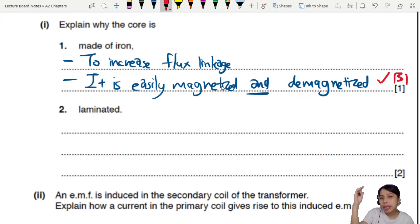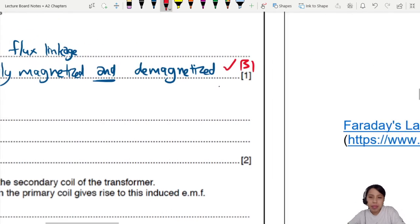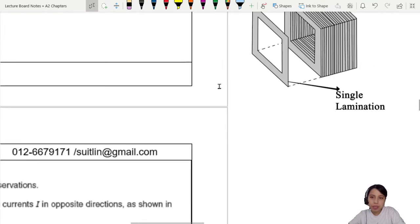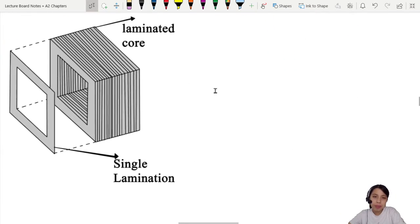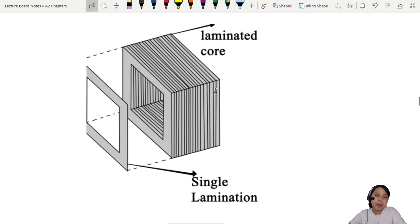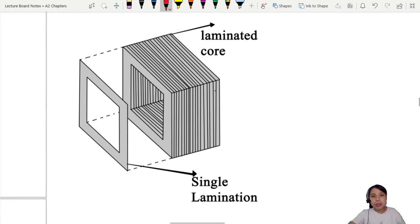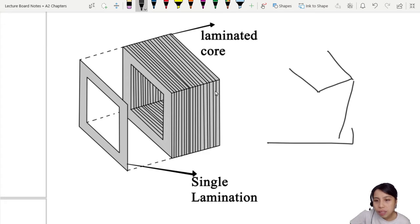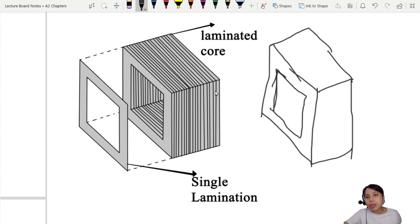Why is the iron core laminated? Question number two. What is laminated? Laminated means something like... Do I have my picture? Where's my picture? There it is. A laminated core. So instead of one single chunk of metal... Let me see if I can draw a single chunk. Single chunk of metal will look something like that. So that's my crude drawing of a single chunk.